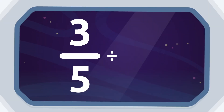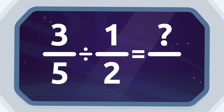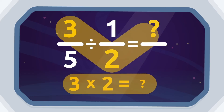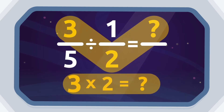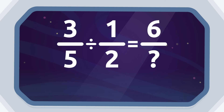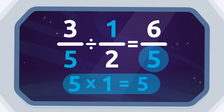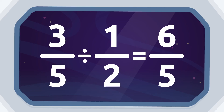Let's look at an example: three fifths divided by one half. To find the numerator, we multiply the numerator of the first fraction by the denominator of the second fraction: three by two, which equals six. To find the denominator, we multiply the denominator of the first fraction by the numerator of the second fraction: five by one, which equals five. So three fifths divided by one half equals six fifths. Excellent!